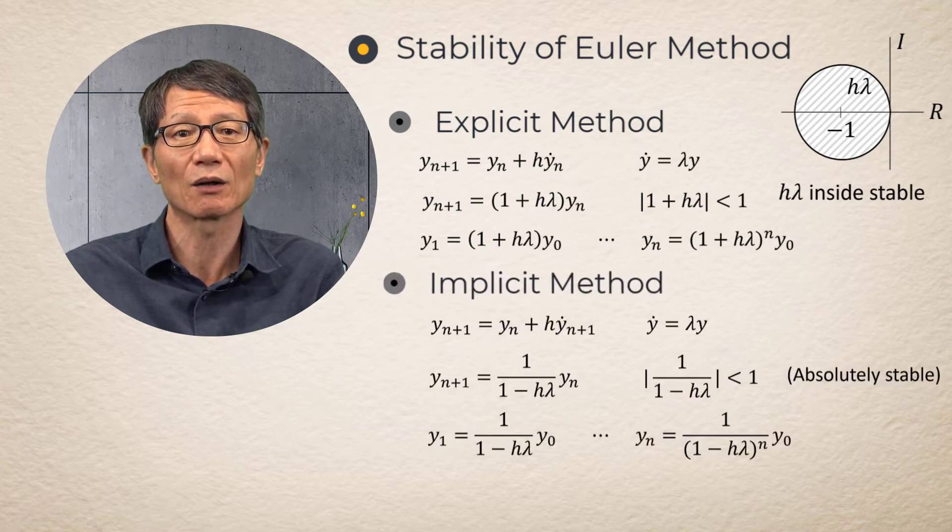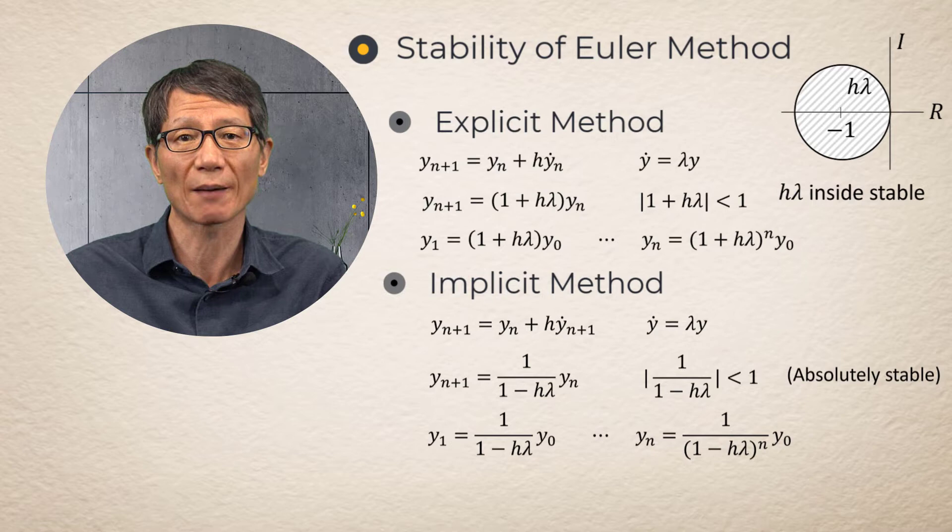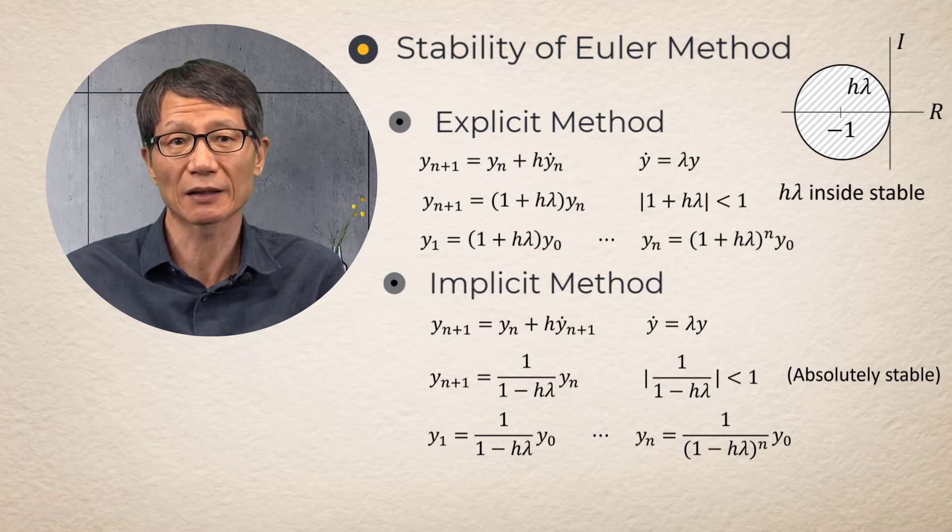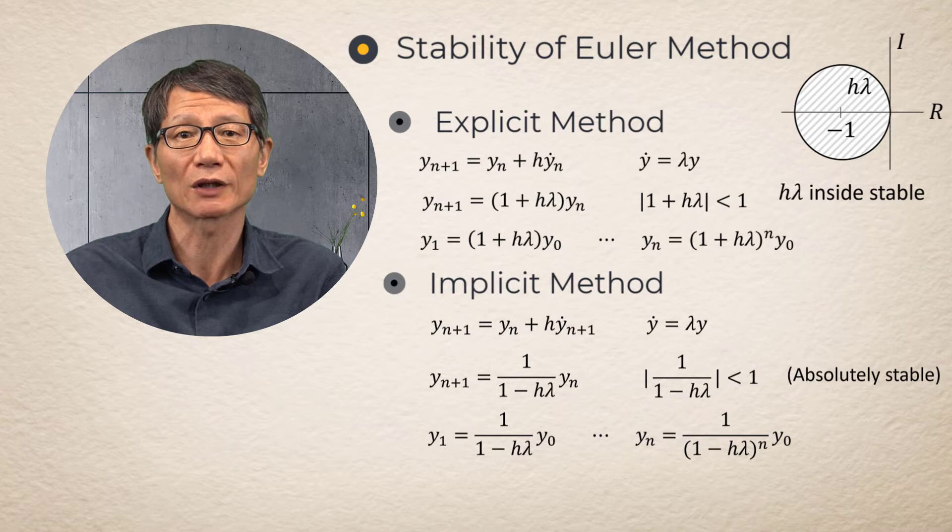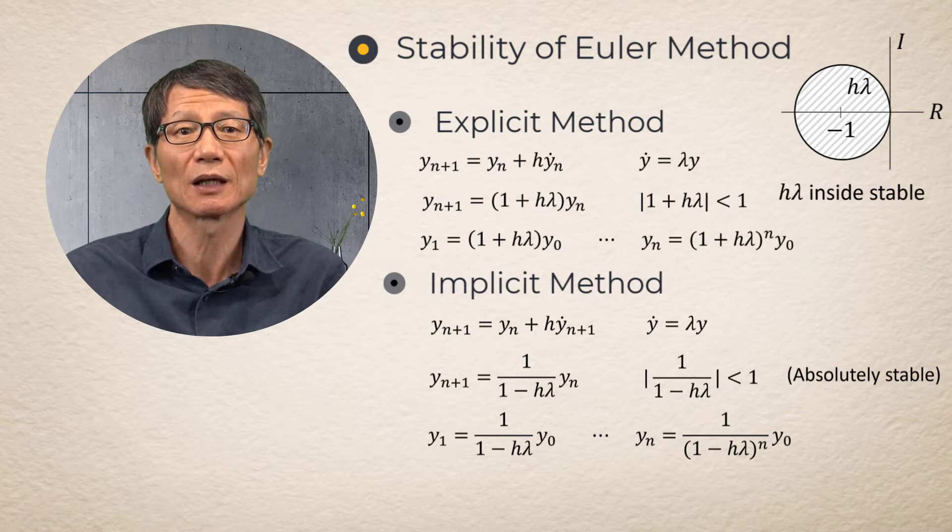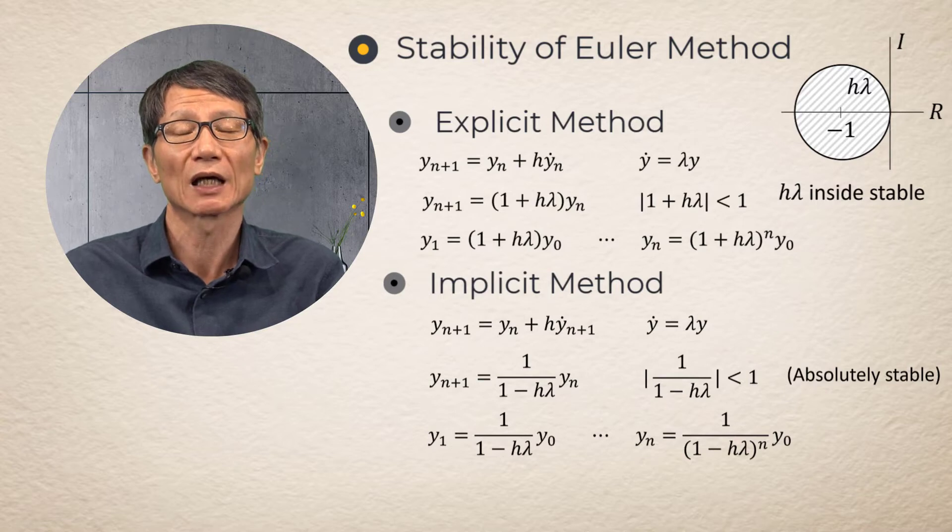Similarly, the multiplier 1 / (1 - hλ) for the Implicit Method must be smaller than 1. It is easy to note that any value of step size satisfies the condition. Therefore, we call Implicit Euler Method to be absolutely stable irrespective of the step size.